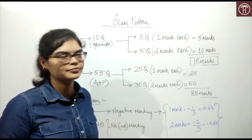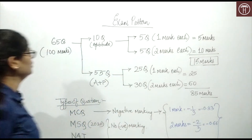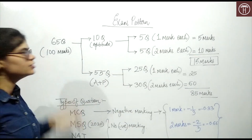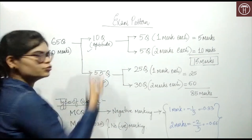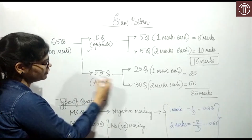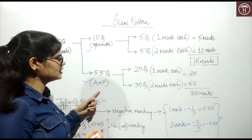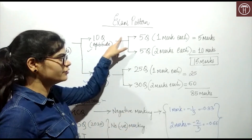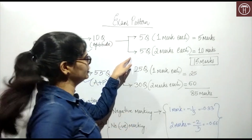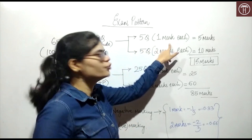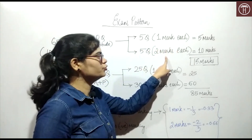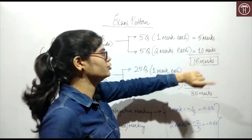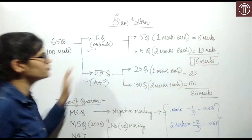Let's discuss the exam pattern. The total 65 questions will be for 100 marks, of which 10 questions will be aptitude and 55 questions will be from architecture and planning. The 10 aptitude questions are divided into 5 questions of 1 mark each and 5 questions of 2 marks each, totaling 5 marks and 10 marks, making 15 marks from aptitude.